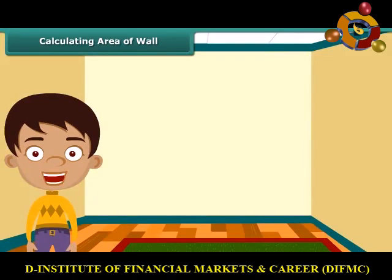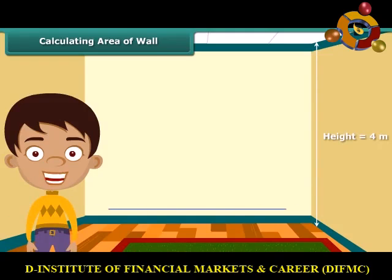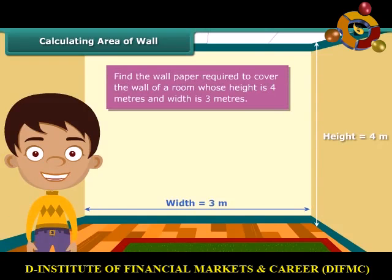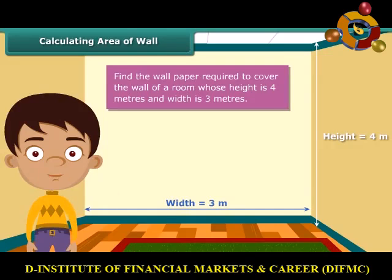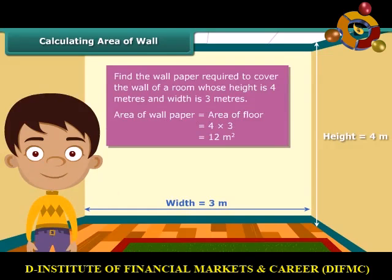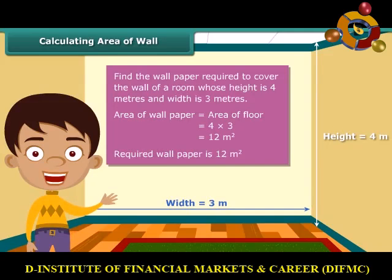Now that we know how to calculate area, let us solve a question. Each wall of Nidhi's room is 4 meters high and 3 meters wide. She wants to cover one of the walls with wallpaper and needs to know how many square meters of wallpaper will be required. The area of the wallpaper required will be the same as the area of the wall. The area of the wall is 4 meters multiplied by 3 meters, which is 12 square meters. So 12 square meters of wallpaper will be required.